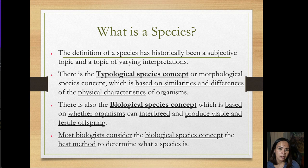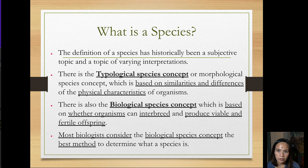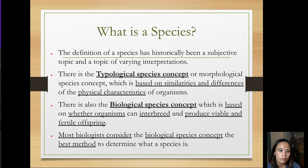What is a species? The definition of a species has historically been subjective. There is the typological or morphological species concept, which is based on similarities and differences in physical characteristics. There is also the biological species concept, which is based on whether organisms can interbreed and produce viable and fertile offspring. Most biologists consider the biological species concept the best method.